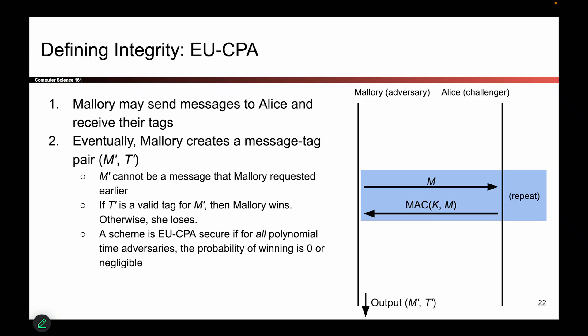You can imagine Mallory might use this query phase to learn something about the MAC scheme, find some flaws in it, or maybe try to learn what the key is — maybe the scheme leaks the key. So if the scheme is insecure, it's possible Mallory uses this section to learn something that breaks the scheme. That would be Mallory's goal as she does this first query phase. Eventually Mallory gets bored or thinks she found a trick to break the scheme and says: I'm ready for my challenge.